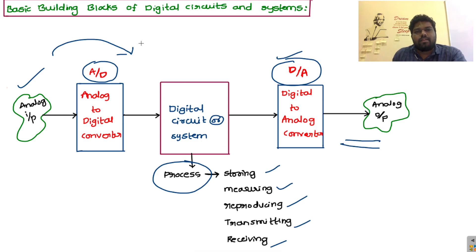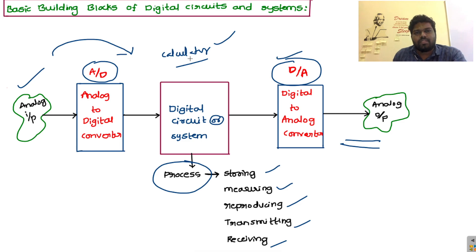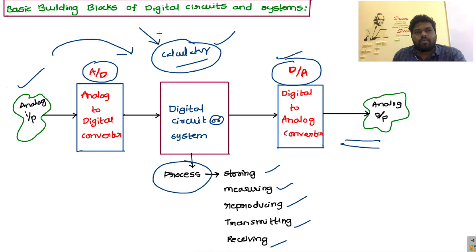For example, consider a calculator as the digital system. A calculator can compute basic operations like addition, subtraction, multiplication, and division. The calculator is a digital electronic circuit, or digital system. When you provide analog input — for example, 3 plus 5 — you can read this data like 3 plus 5 equals 8.